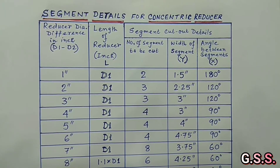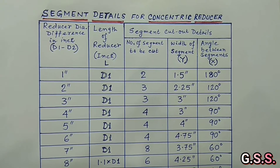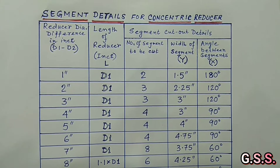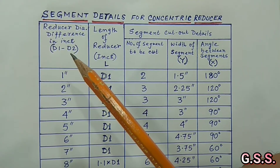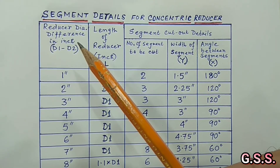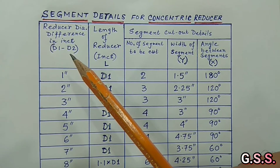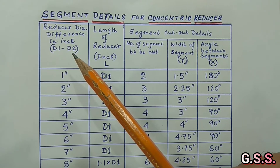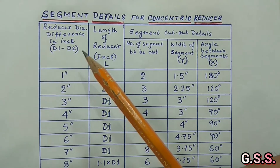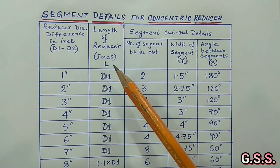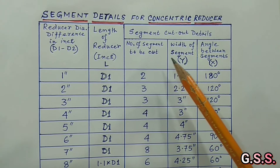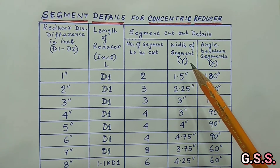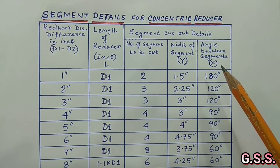This table indicates segment details for the concentric reducer. The first column is the reducer diameter difference D1 minus D2 in inches — that is, the difference between the large end diameter and the small end diameter in inches. The next column is the length of the reducer. Then the next column is the number of segments to be cut, followed by the width of each cut segment, and then the angle between segments.